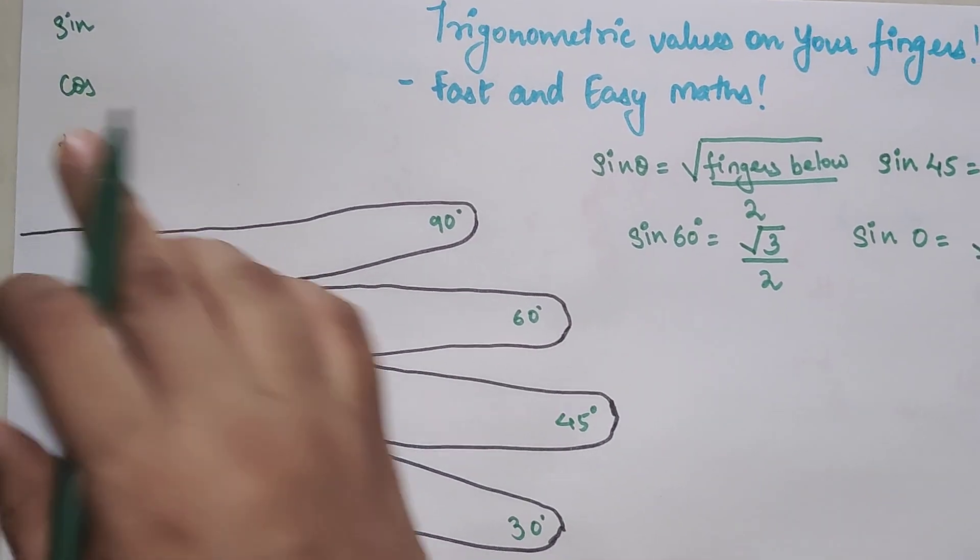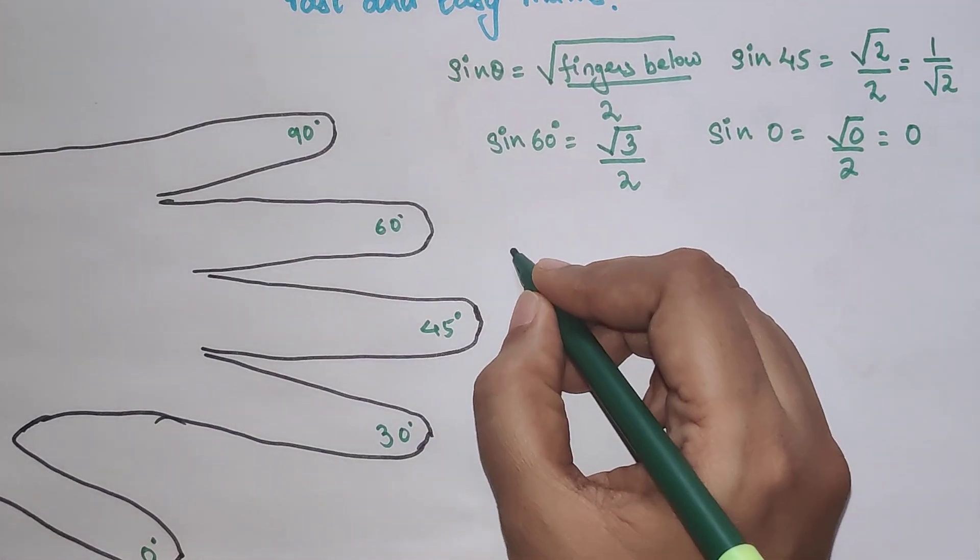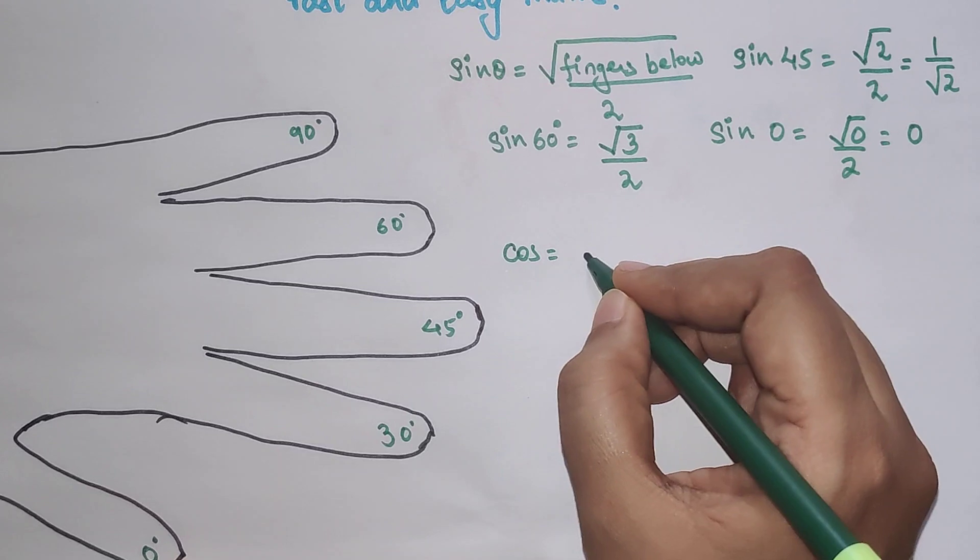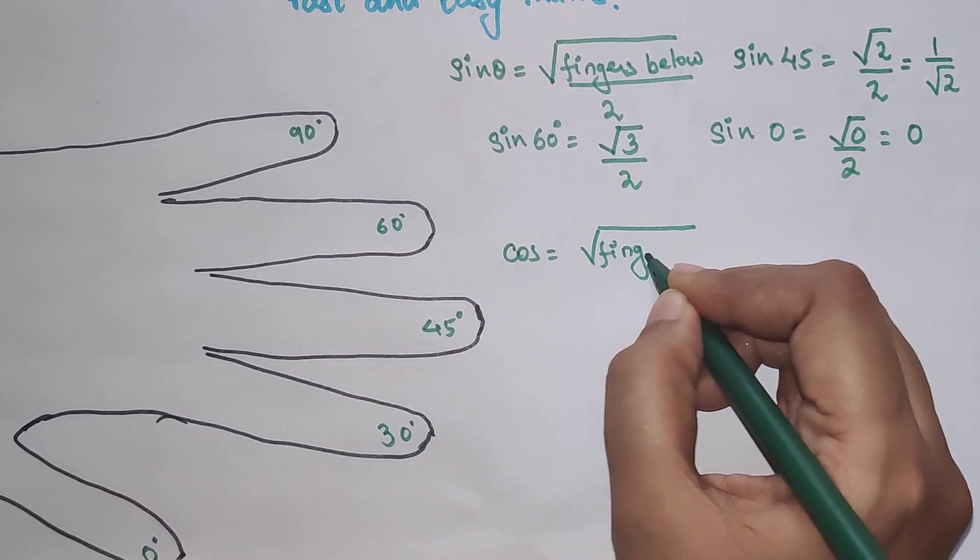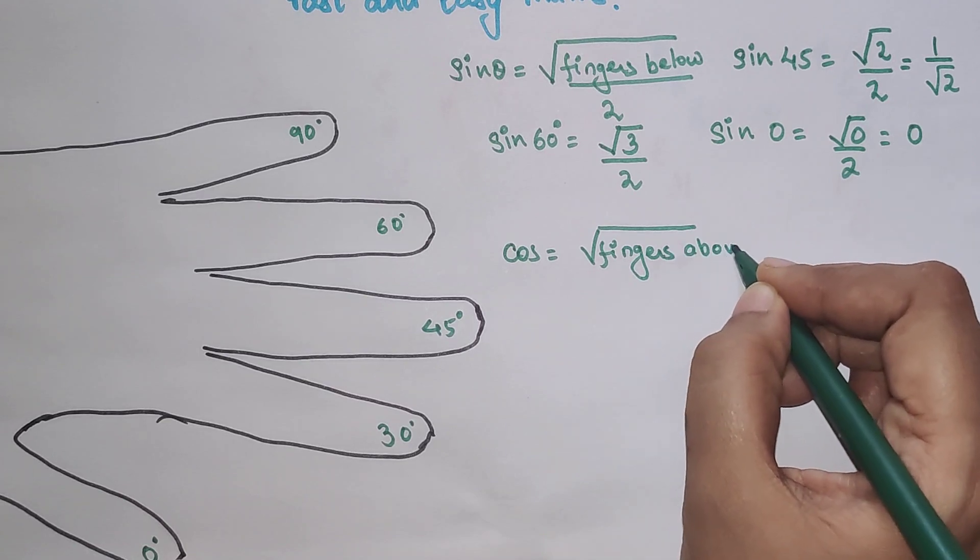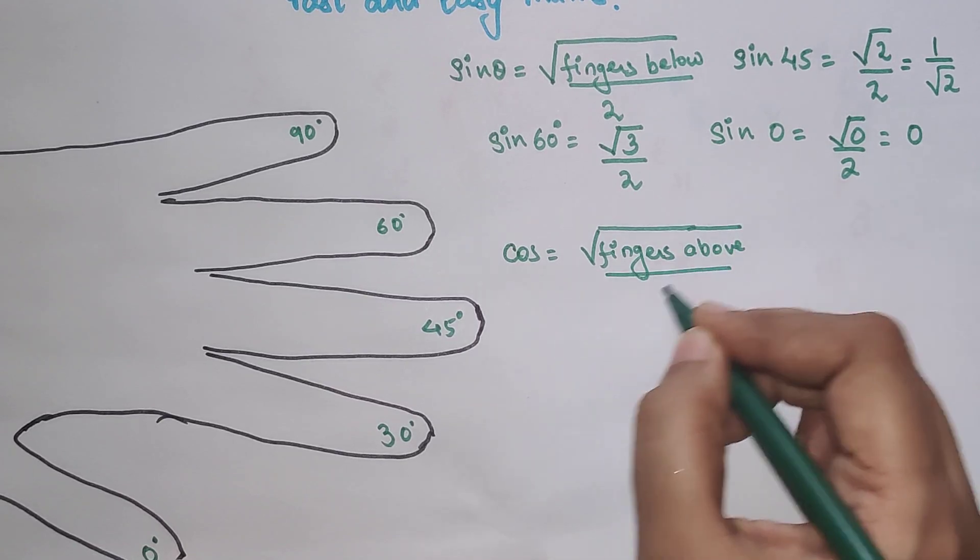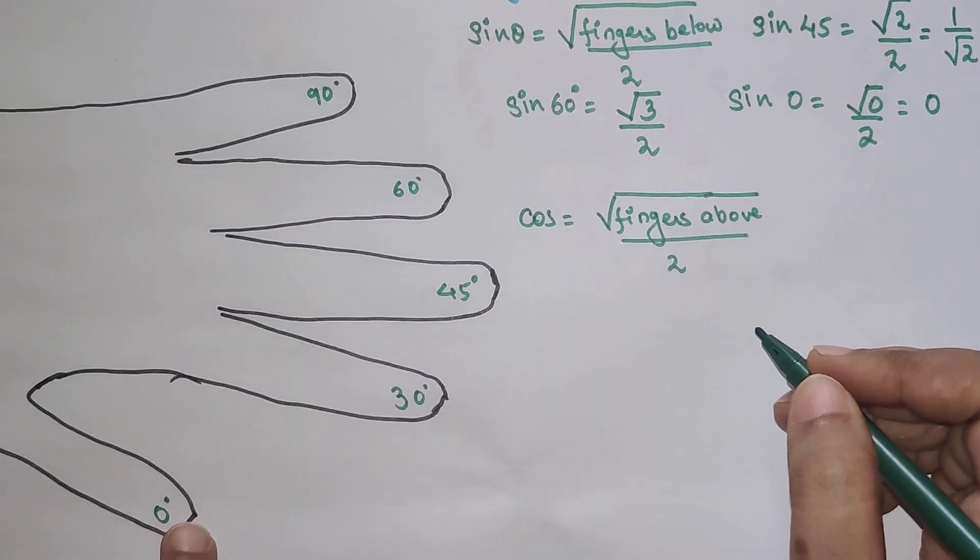Now coming to the next one, what will happen for cos? So cos formula is root of fingers above upon 2.